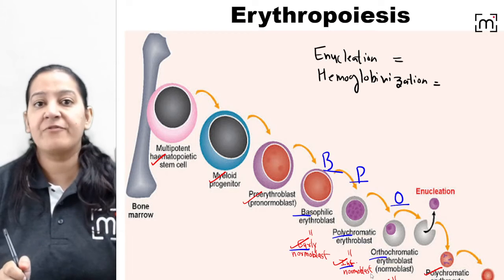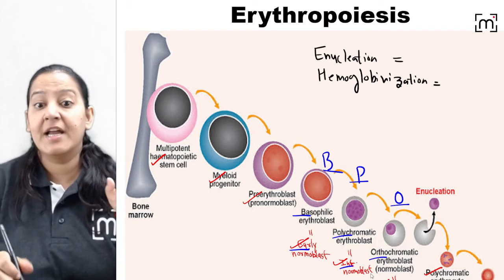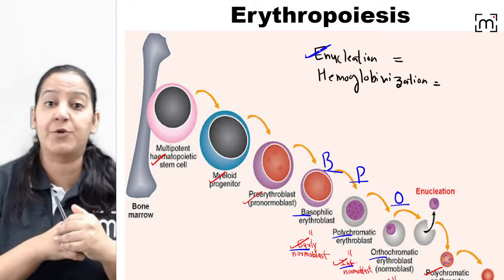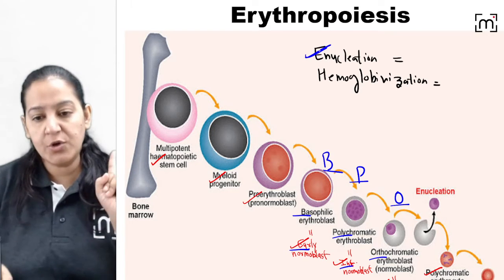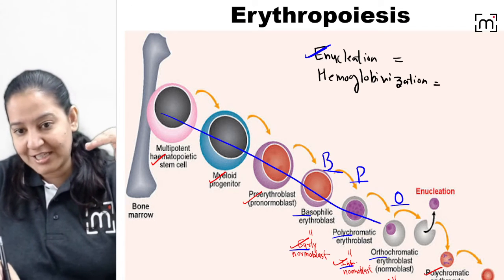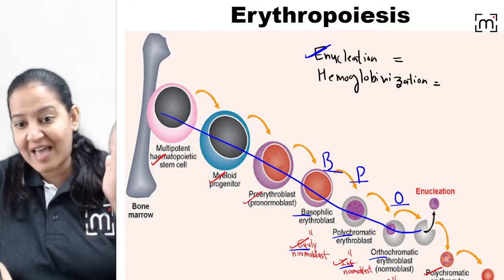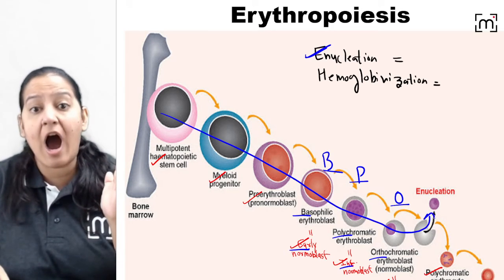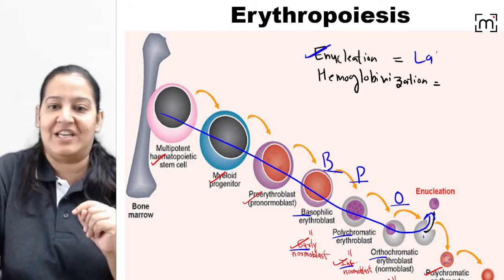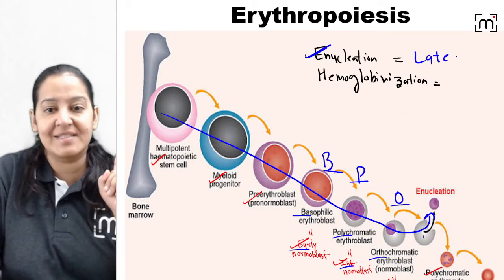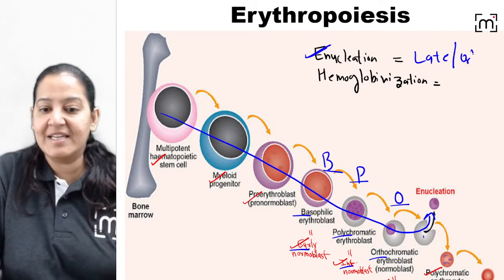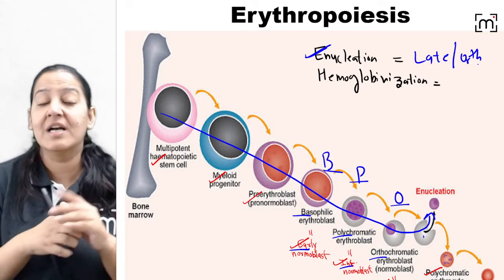Two MCQs come from this series. Number one: enucleation takes place at which stage? You can see that the precursors have a nucleus, but the nucleus is extruded out of the cell at the late normoblast stage — also known as orthochromatic normoblast.